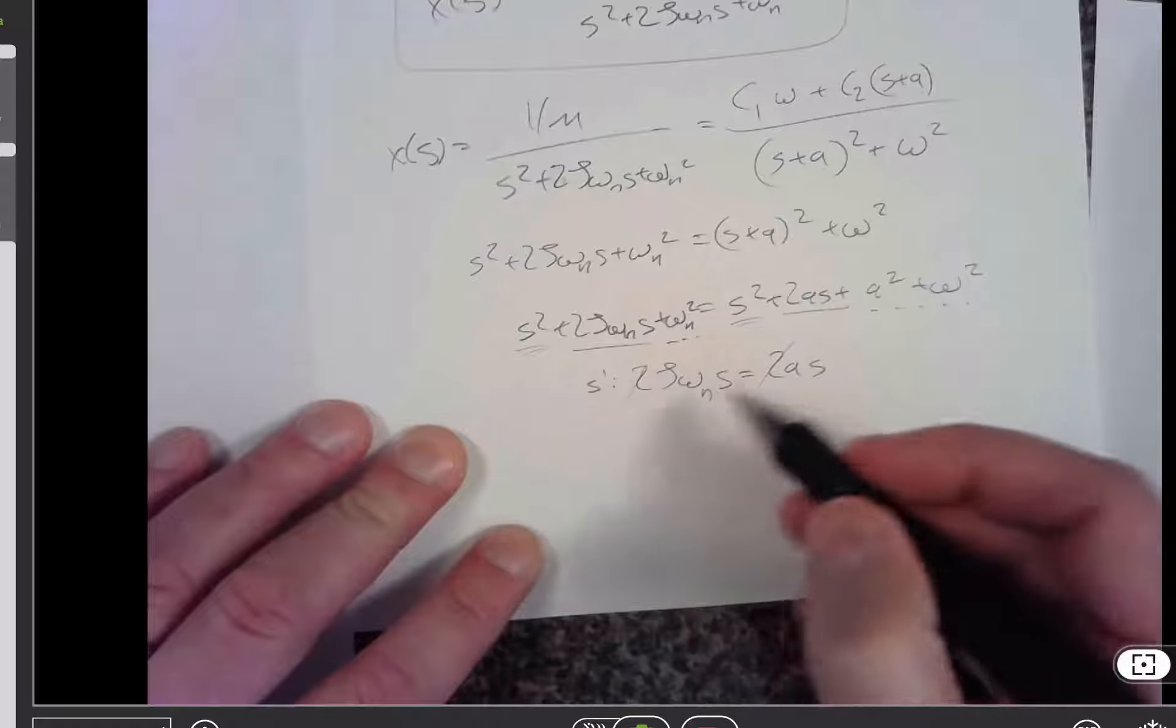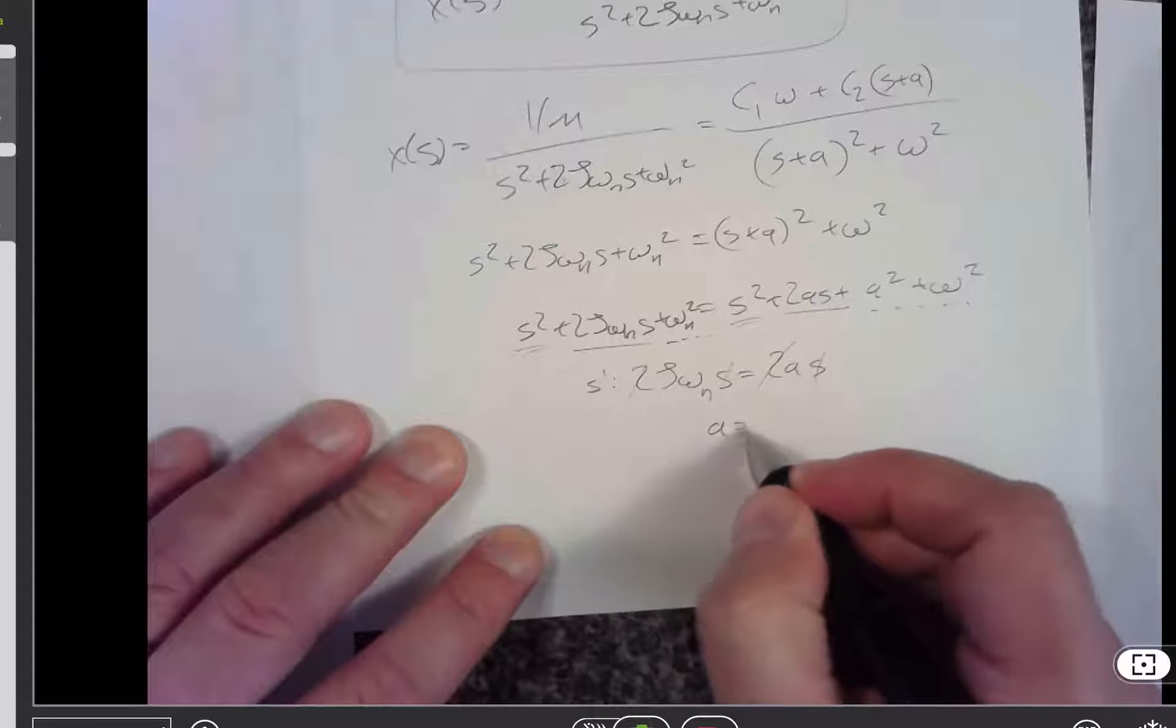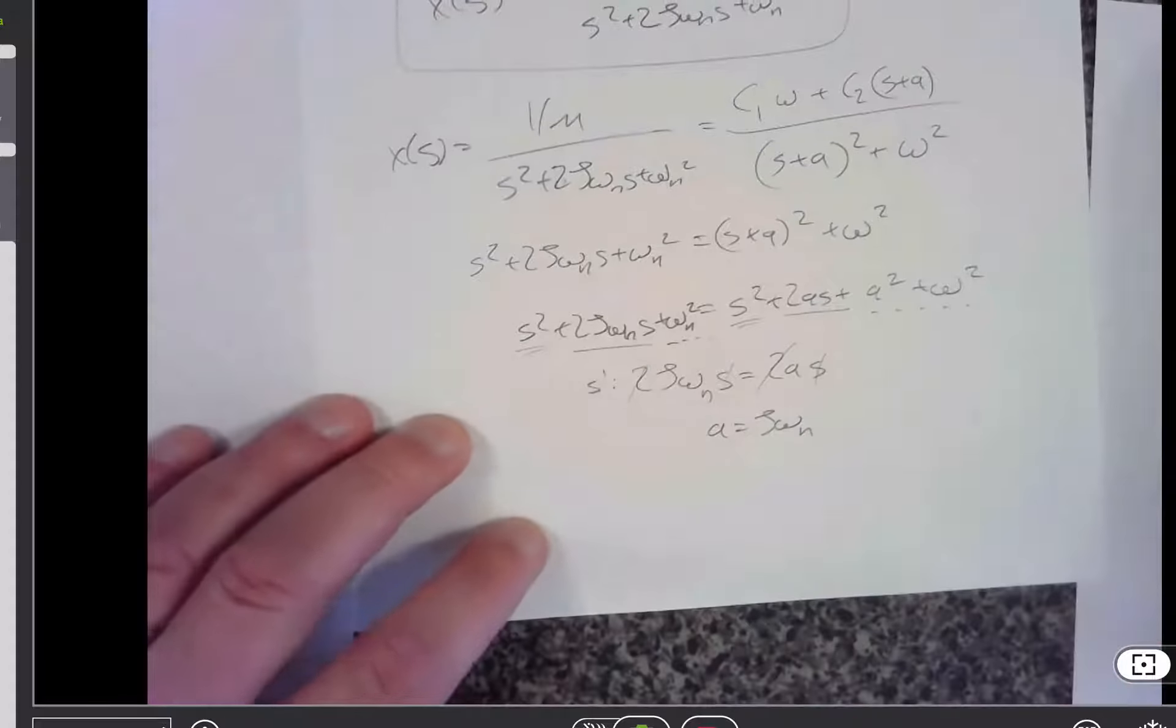And so the 2s cancel, and the ss cancel, and I'm left with a is equal to zeta omega n. So that solves for one of my unknowns.